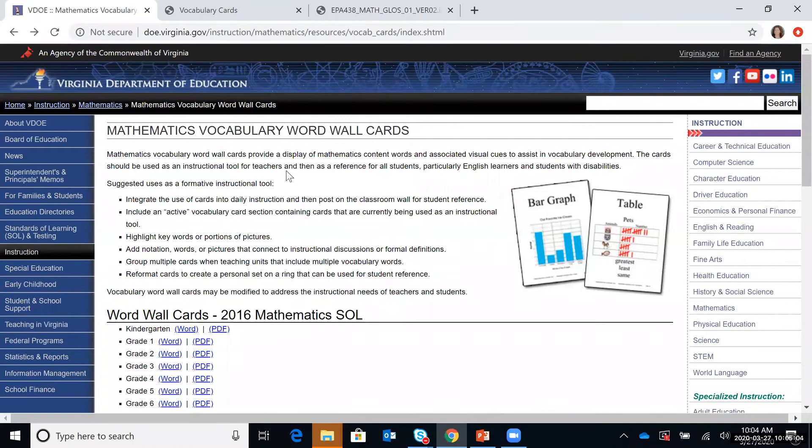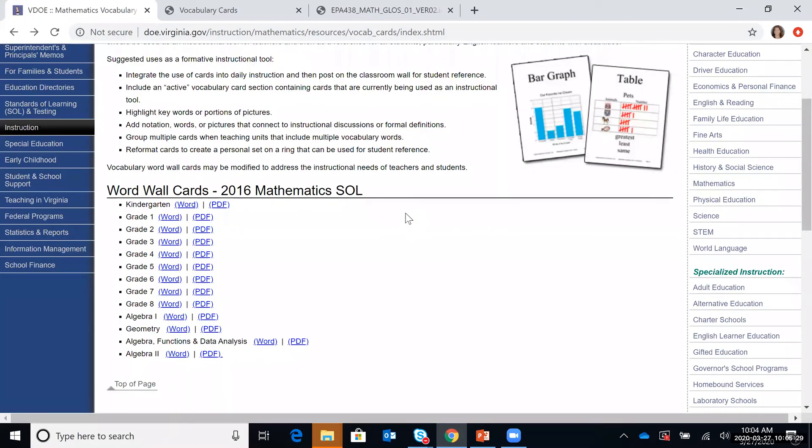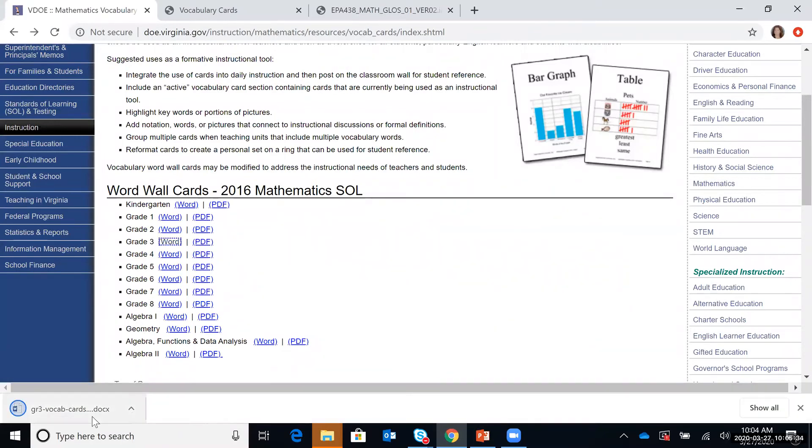So the first one is the Virginia Department of Education mathematics vocabulary. All of these sites are easy to find if you just do a quick internet search using Google. If you type Virginia Department of Ed math vocabulary cards, you'll see this option pop up. So you can see in here that there are different word wall cards. So you can think about the grade of student that you're working with. So let's pick grade three. You can download it as a word file, save it and print it, or it's available as a PDF.